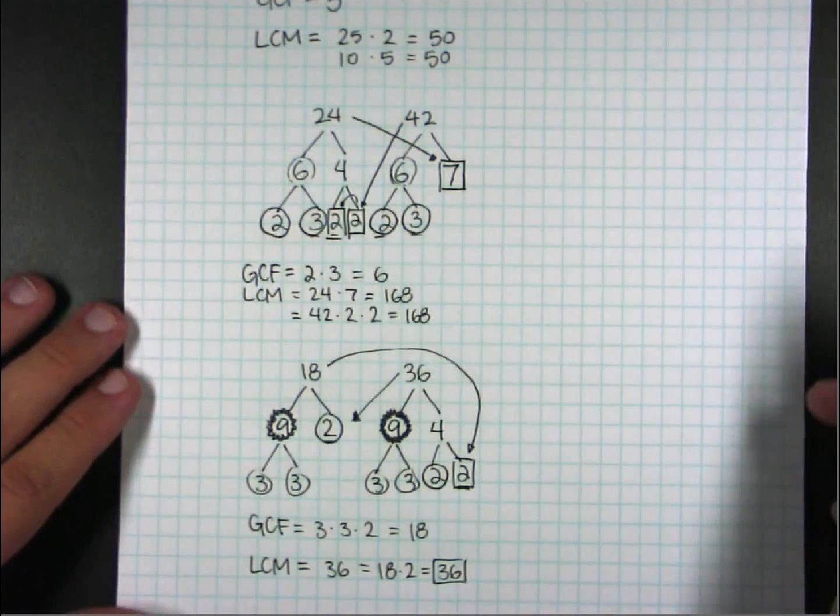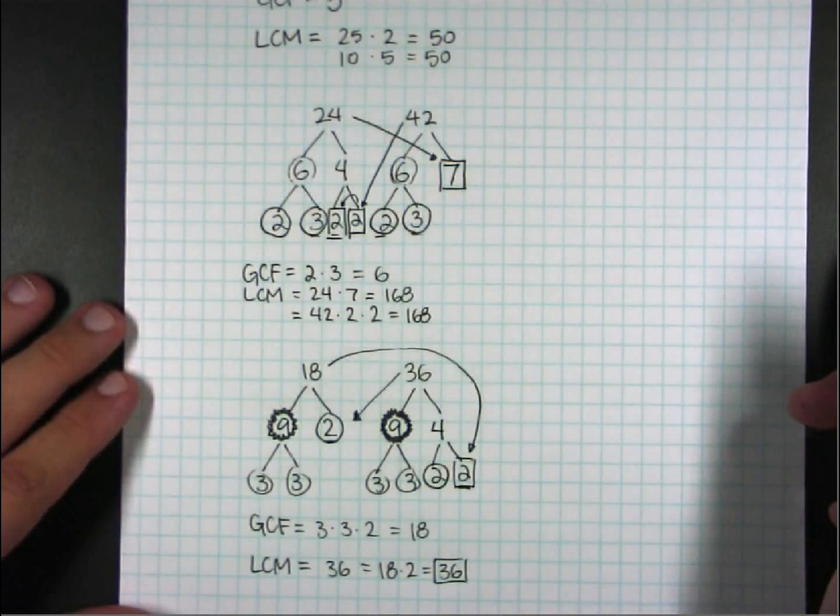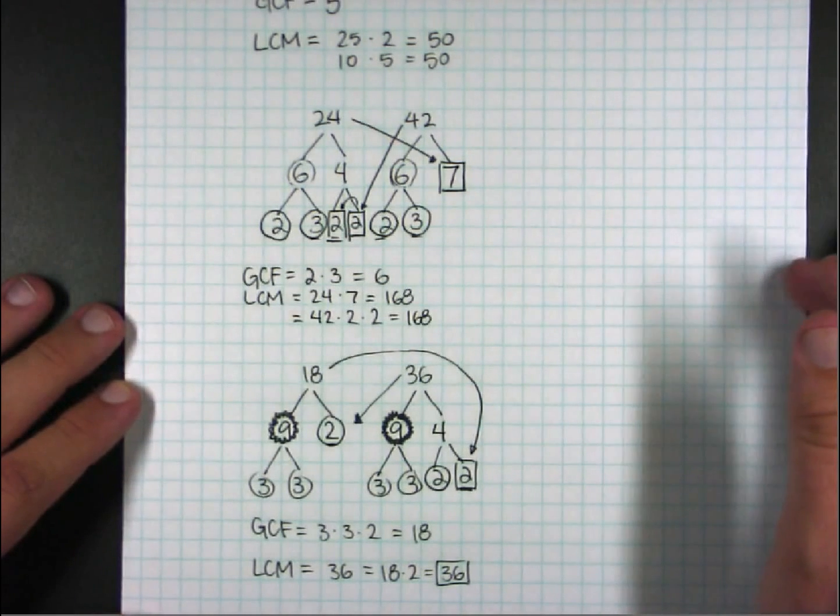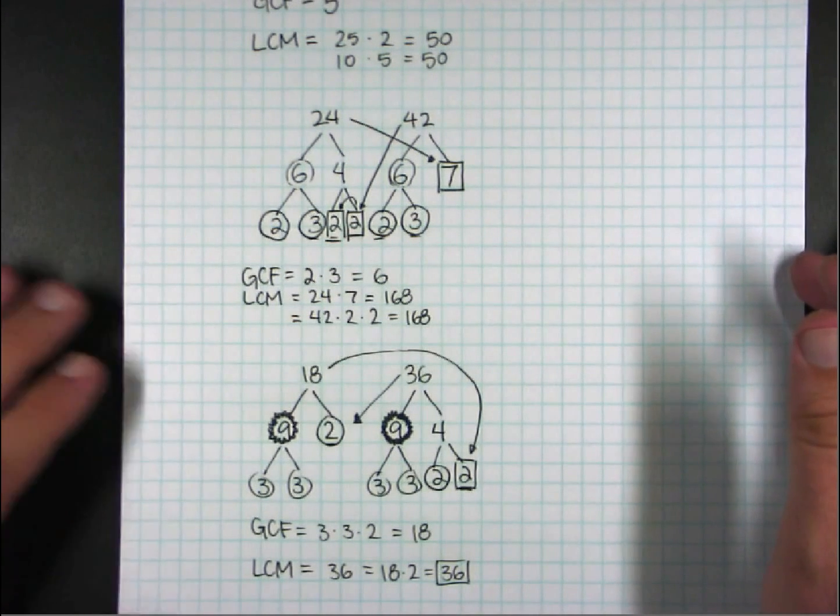This method always works. It's probably the easiest way I've found to do least common multiple, especially if you're already doing greatest common factor. I hope this helped. And if you have any questions or comments, please leave me a comment. Thank you.